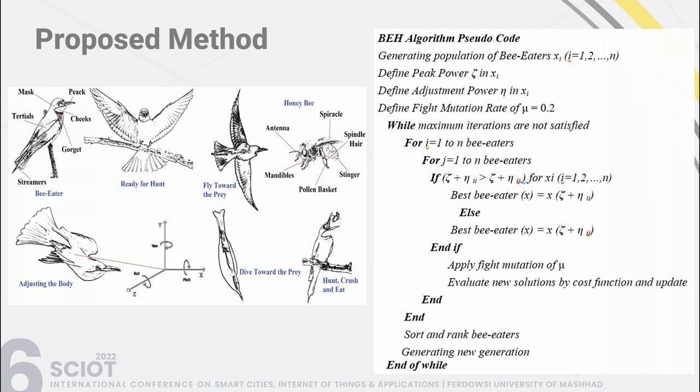The algorithm runs until the maximum iteration is satisfied. The main core is: if the peak power zeta and adjustment power eta of one bird is better than another in the population, they swap places. If not, the same bird remains. Finally, mutation is applied, the cost function is evaluated for all individuals, they are sorted, and a new generation is produced until maximum iterations are satisfied.